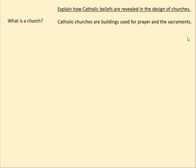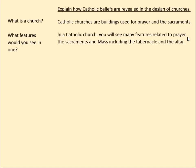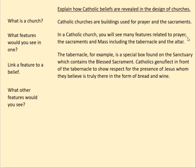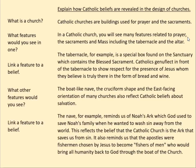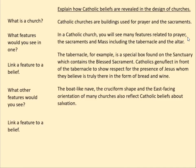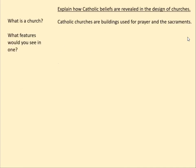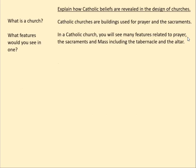The rest of the answer follows a very simple pattern: what feature can you see, and then how does it link to a belief? You can do that again and again, as efficiently as possible without repeating yourself. In a Catholic church, you'll see many features which relate to prayer and the sacraments and mass, including the tabernacle and the altar. Then choose one of those and go into detail, linking it back to Catholic beliefs — that is what the question is about.